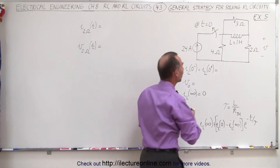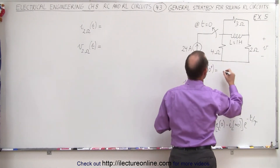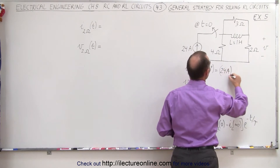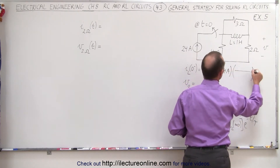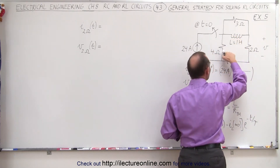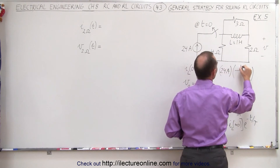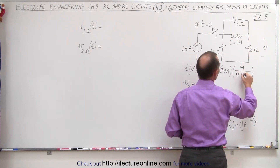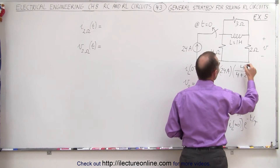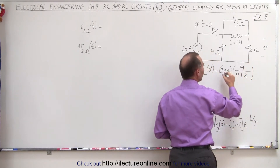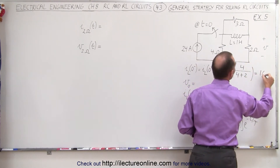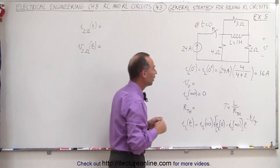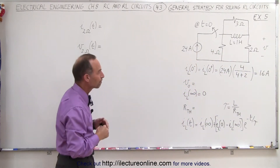The way to find that is to take the total current, which is 24 amps, and multiply it times the ratio of the resistance in the other branch, which is the 4-ohm resistor, divided by the total resistance across the two branches, which is 4 plus 2. That's 4/6 or two-thirds of 24 amps, which is 16 amps of current flowing through the inductor before the switch opens up.